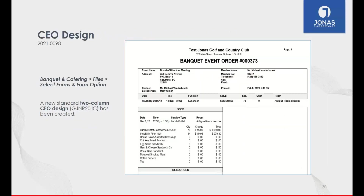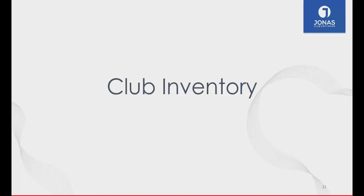We've also created a new BEO — Banquet Event Order — design. I like to refer to this as the split-column or two-column design, a really nice way to present an event order that maximizes real estate on the page. Using that split column means you can fit more information onto one page, reducing the number of pages your staff has to reference for an event order.